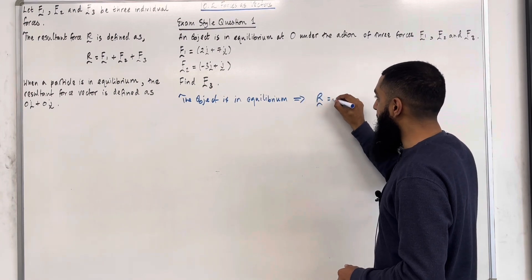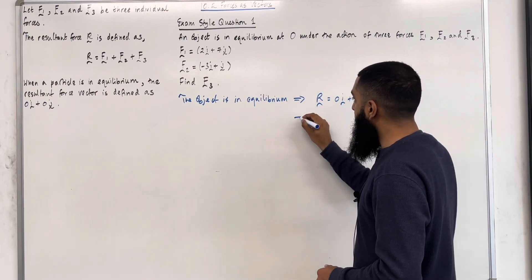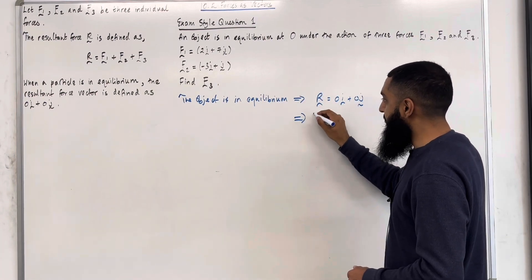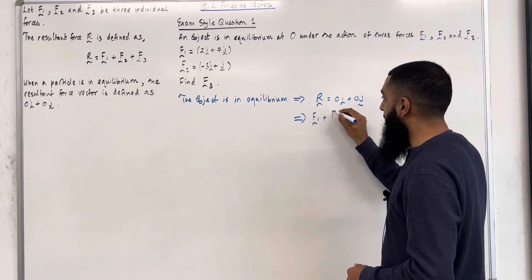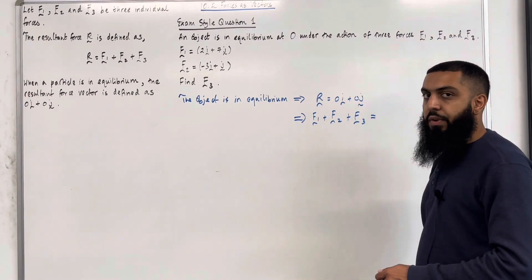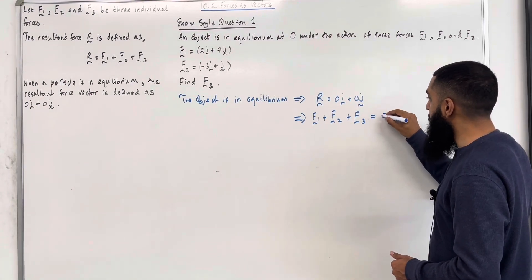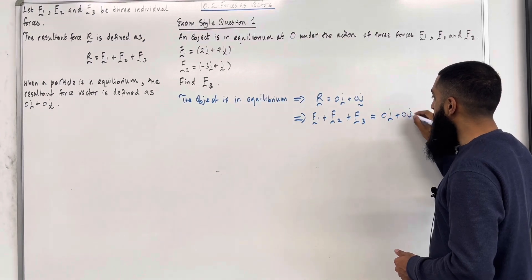But the resultant force R is given as F1 plus F2 plus F3, the sum of the three individual forces. So F1 plus F2 plus F3 is equal to 0i plus 0j.